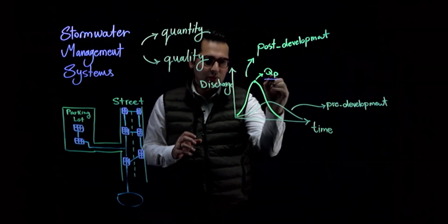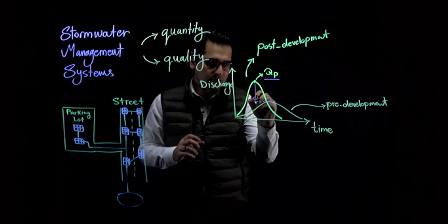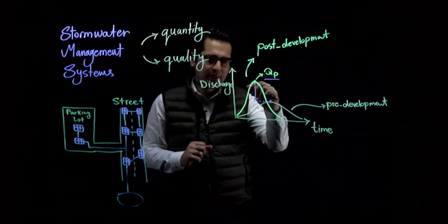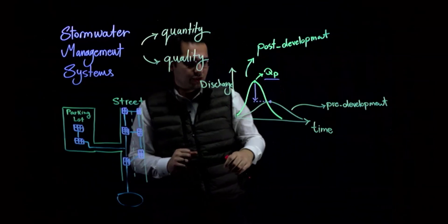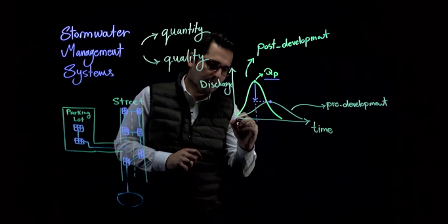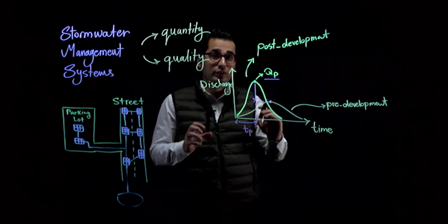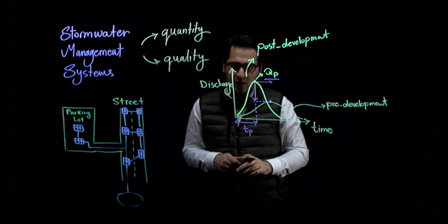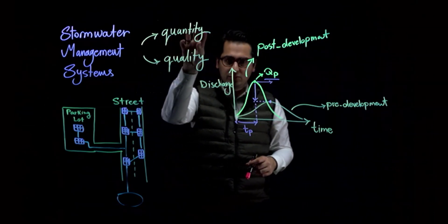We do not want this high peak. We want to lower the peak back to the pre-development condition — before urbanization. This process is called attenuation, meaning we lower the peak of the post-development hydrograph to its original pre-development state. We also want to delay the time to peak as much as possible for flood control purposes — moving this peak to the right-hand side of the graph.